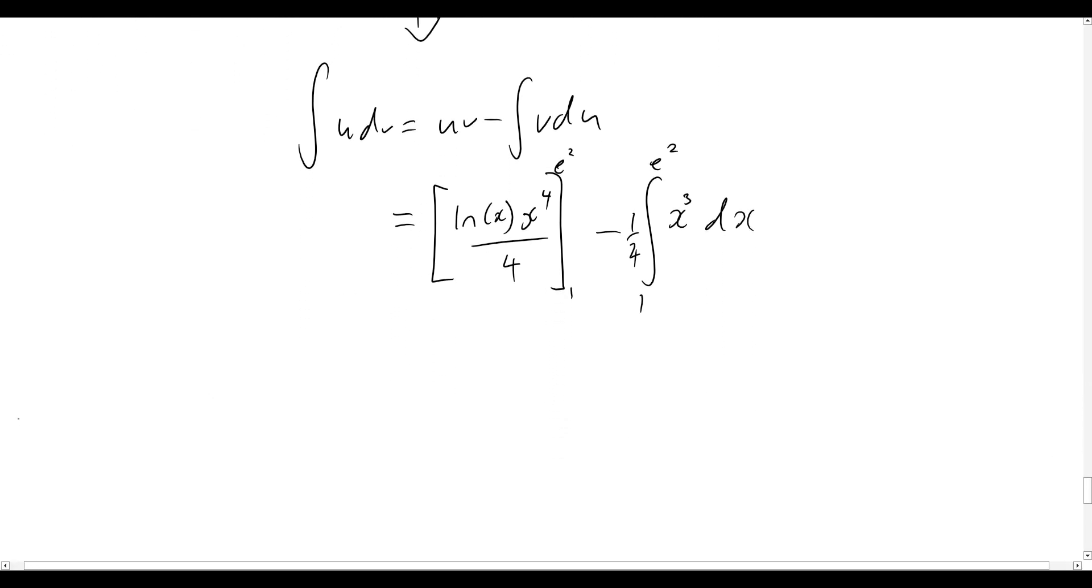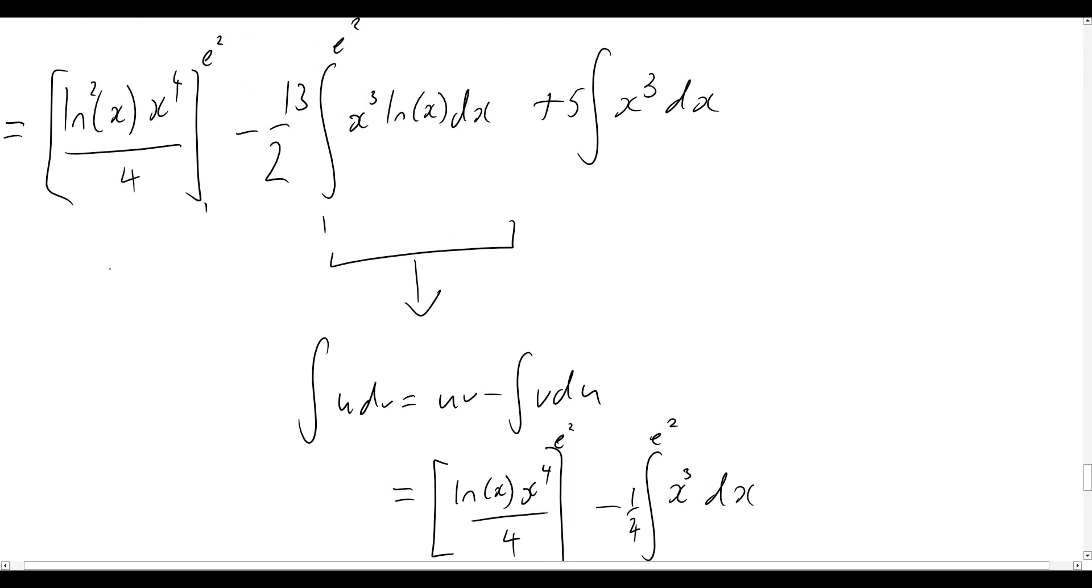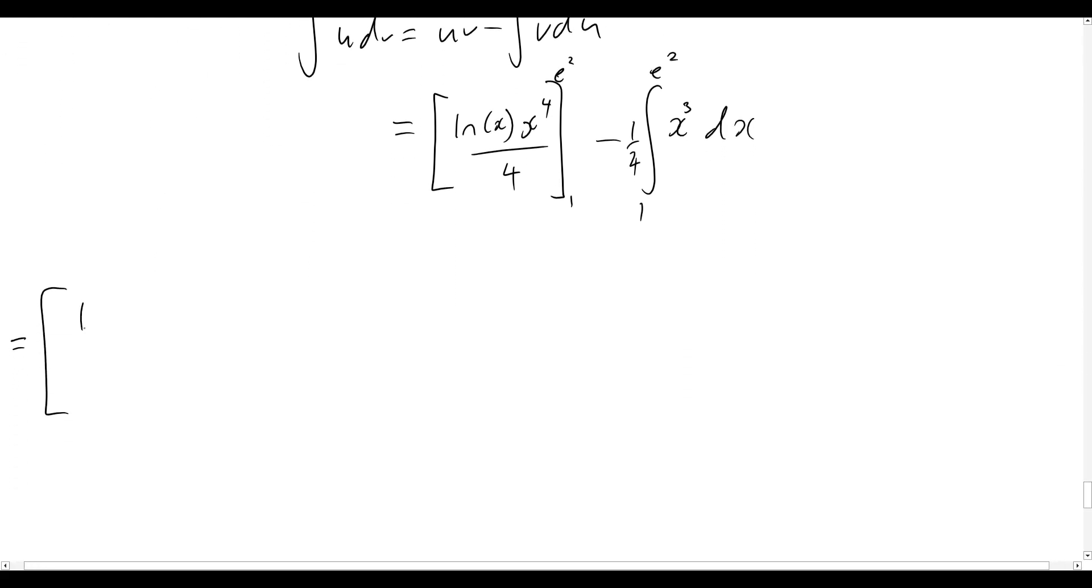So now let's rewrite our entire problem with all these different sections that we need to evaluate. So we'll have natural log squared of x times by x to the 4 all over 4, and we are evaluating that from 1 to e squared.